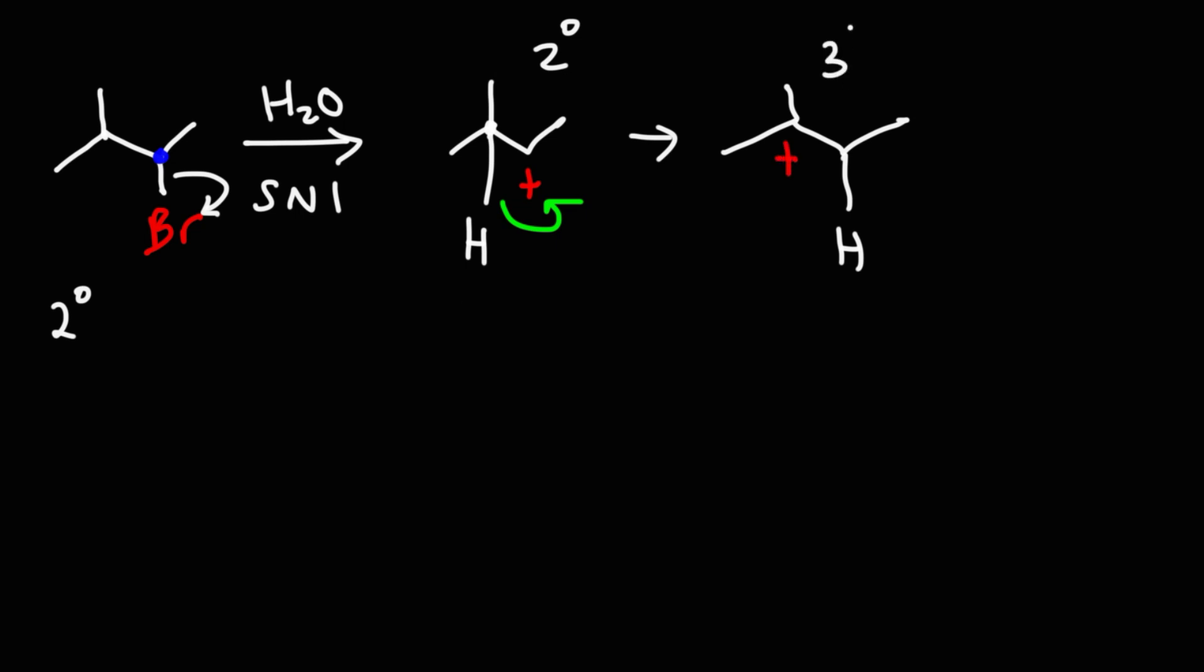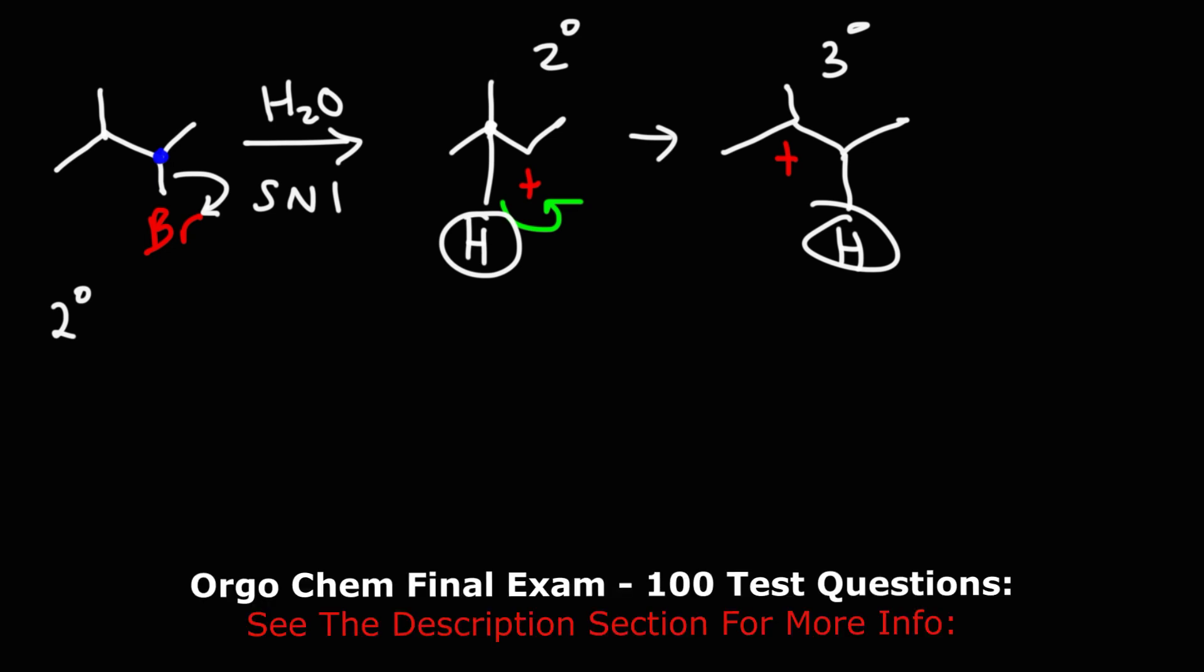So now we have a tertiary carbocation as opposed to a secondary carbocation. The reason why this rearrangement occurs is due to an increase in stability. By moving the hydrogen from this position to that position, the carbocation becomes more stable. So that's the driving force for a rearrangement reaction, its stability.